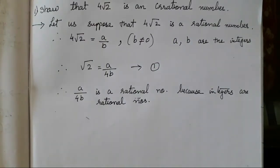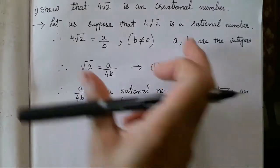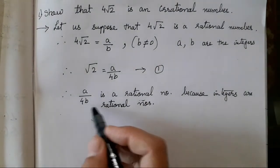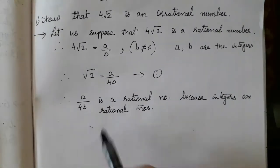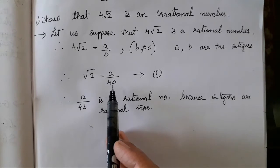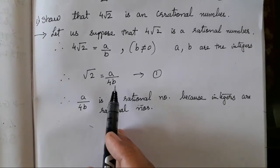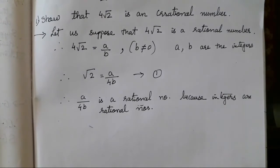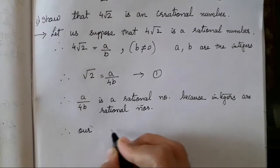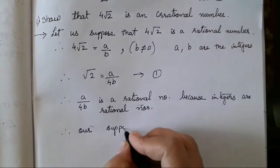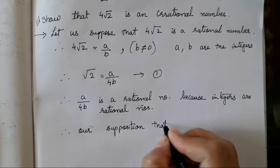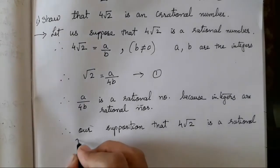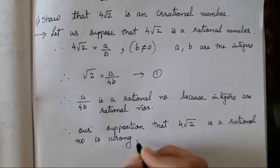What we have done is taken a statement, defined what we wrote, and according to the properties of rational numbers, A upon 4B is rational. So on the right hand side you will see a rational number, whereas on the left hand side, root 2 is an irrational number. This is contradictory. Therefore, our supposition that 4√2 is a rational number is wrong.